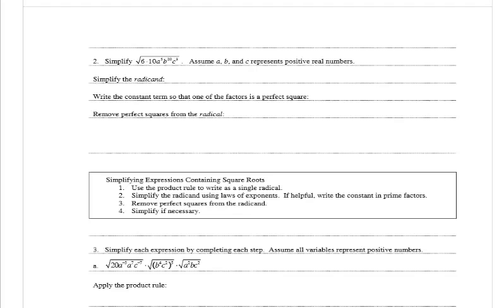In number 2, it wants us to simplify the square root of 6 times 10 times a to the 5th, b to the 20th, c to the 3rd. Assume a, b, and c represent positive real numbers. First, simplify the radicand: 6 times 10 gives us 60. Then write the constant so one factor is a perfect square — factors of 60 that include a perfect square would be 4 and 15. So we have the square root of 4 times 15 times a to the 5th, b to the 20th, and c cubed.